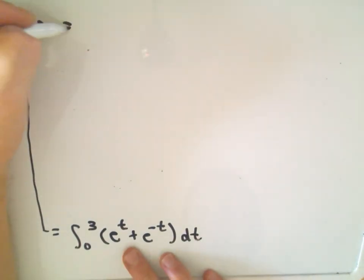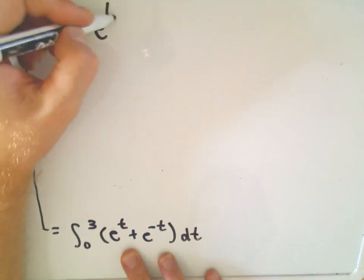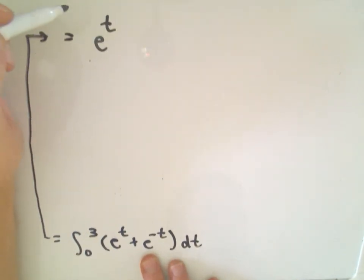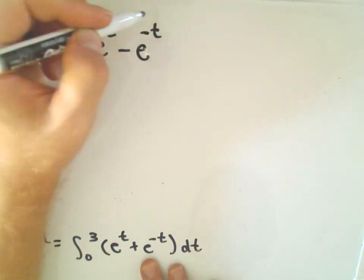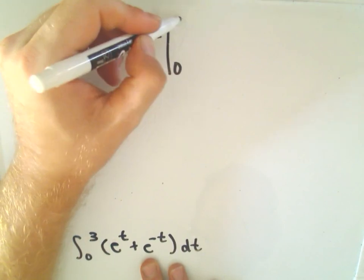Okay, so now if we simply integrate e to the t, we get e to the t. You can do a u substitution. If you integrate e to the negative t, we would get negative e to the negative t. We would have to evaluate that from 0 to 3.